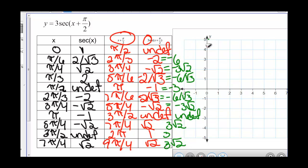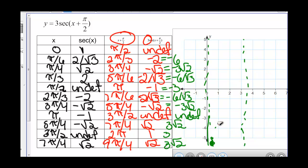When we plot these points, we see that x equals 0 is undefined as well as pi. At pi over 6 we're at negative 6. At pi over 4 we're at negative 3 square root of 2. At pi over 2 we're at negative 3, and then we start working our way back down. On the other side, at 5 pi over 4 we're at 3 square root of 2. At 3 pi over 2 we're at 3, and then we're working our way back up.